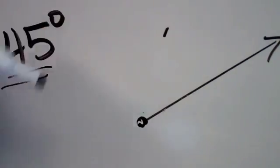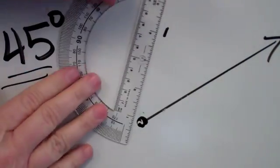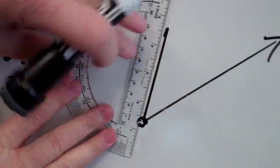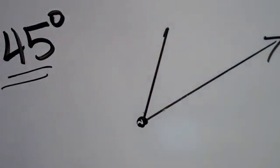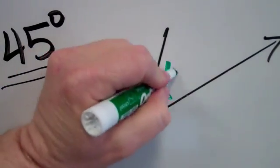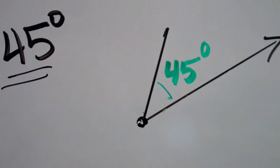Now I'm going to use my straight edge and connect that tick mark with my vertex. This right here is my 45-degree angle.